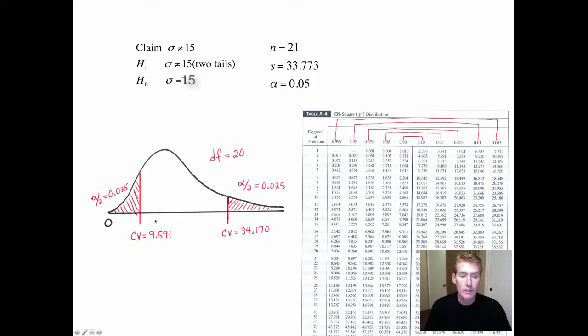So basically, if the test statistic lands between 0 and 9.591, we're going to reject H sub O. And if it lands in here, past 34, we're going to reject H sub O. So now it's time for the formula. You just need to type this into the calculator yourself. This is degrees of freedom. This is the sample standard deviation squared. And then the number from the claim, 15. That turns out to be 101, which obviously goes past 34.17.